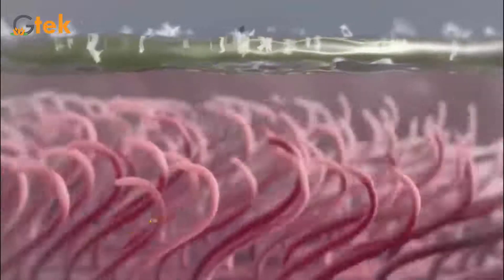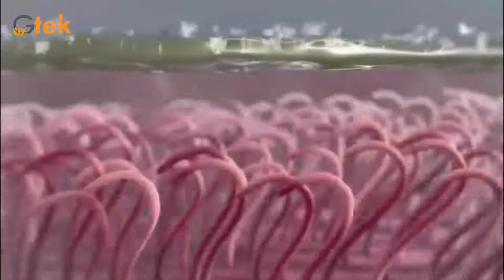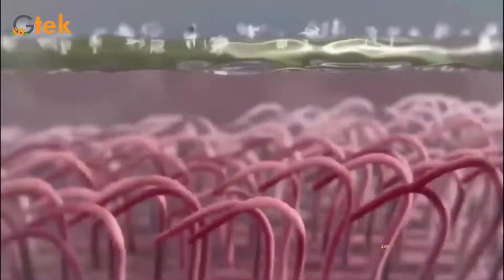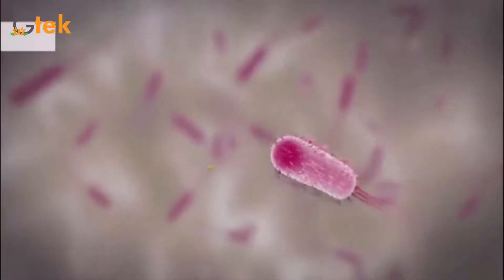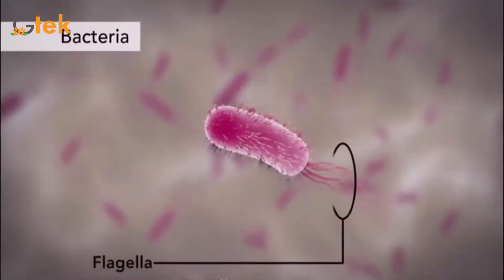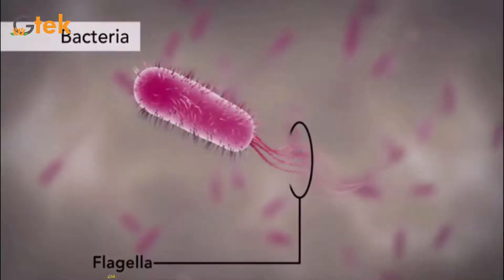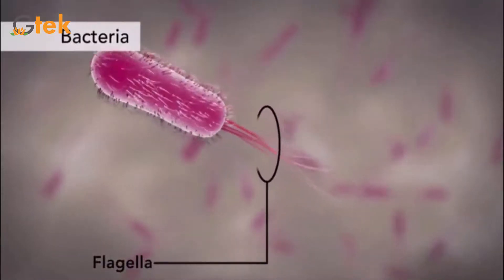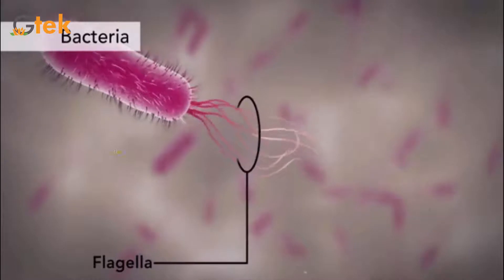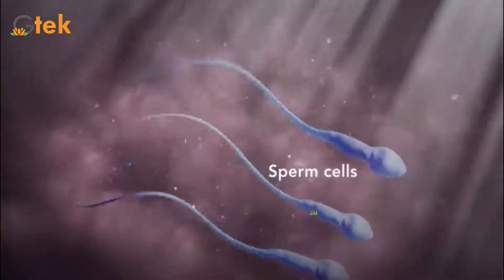Here you can see the movement of the heart and blood, and bacteria. The tail portion of bacteria is called the flagella — you can see the movement of bacteria. And this is nothing but the sperm cells.